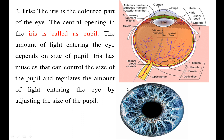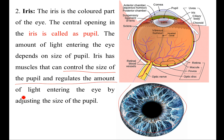The next component is the iris, the colored part of the eye. The central opening in the iris is called the pupil. The amount of light entering the eye depends on the size of the pupil. The iris has muscles that can control the size of the pupil and regulate the amount of light entering the eye.